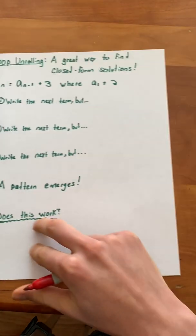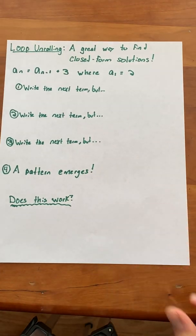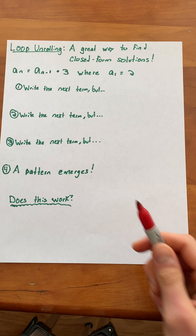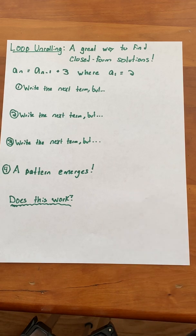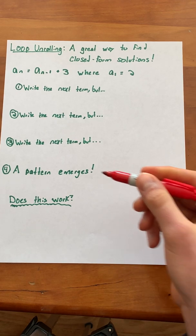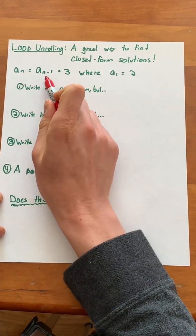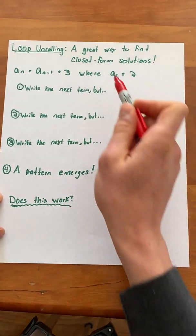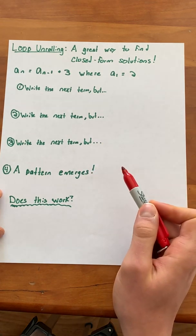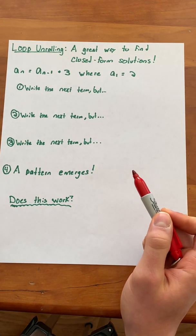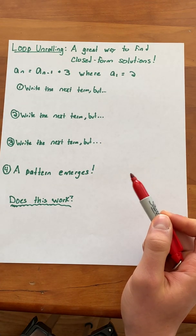One of the best ways to go about finding a closed-form solution is through loop unrolling. For example, suppose we're given the recurrence relation a of n equals a of n minus 1 plus 3, where a of 1 equals 2. I'm going to walk through how we would go about unrolling this to find a closed-form solution.